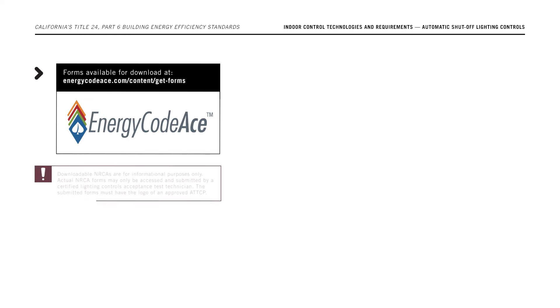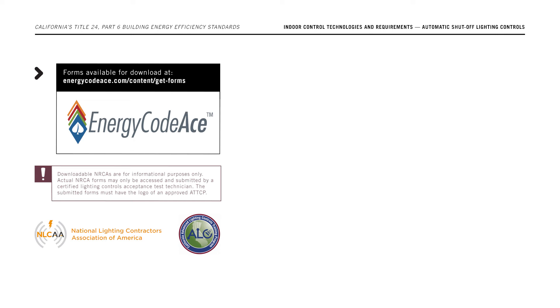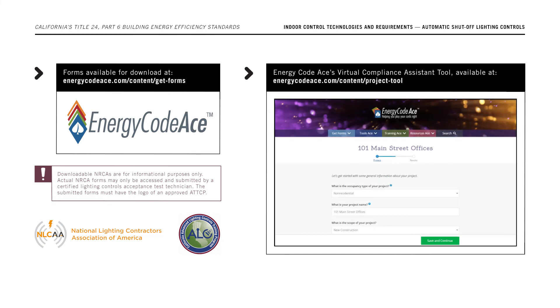All forms are available for download as PDFs on energycodeace.com. Acceptance test forms are provided for informational purposes only. Actual NRCA forms may only be submitted by a Certified Lighting Controls Acceptance Test Technician, and the forms must have the logo of an Approved Acceptance Test Technician Certification Provider (ATTCP). Additionally, Energy Code Ace's Virtual Compliance Assistant Tool is available at energycodeace.com/content/project-tool to help fill out the certificates of compliance.